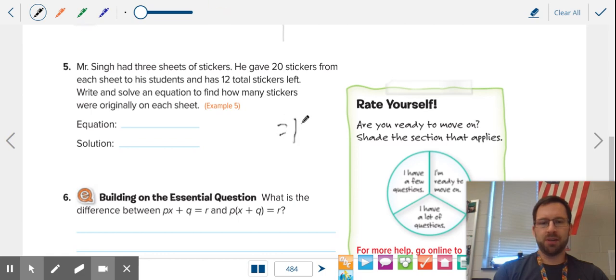So, we know that total left over, he has 12. We know that he had three sheets to begin with. Each sheet was made up of an unknown number of stickers, and he gave away 20.